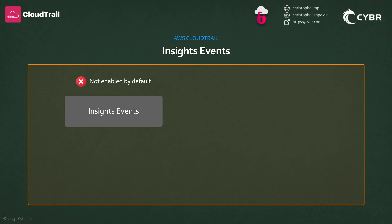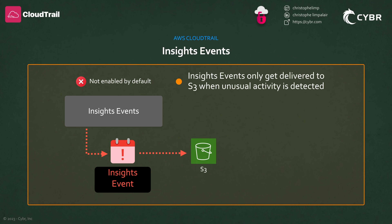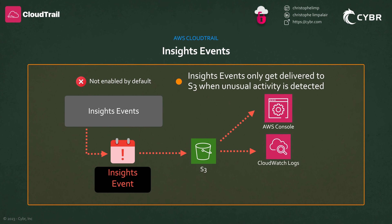CloudTrail Insights is not enabled by default, and they are an extra charge, but I'll show you how to enable and use them in the next section. Once they are enabled and CloudTrail detects unusual activity, it will deliver those events to your destination S3 bucket. You can also view the information from the CloudTrail console, and you can configure CloudTrail to send insights events to CloudWatch Logs, or you can create a rule in Amazon EventBridge to deliver insights events.